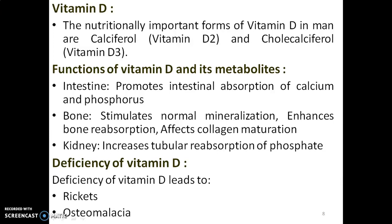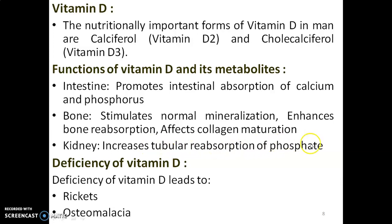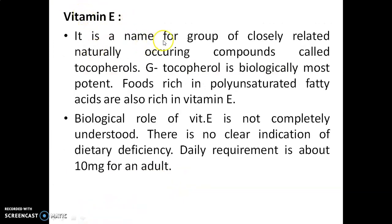Vitamin D: the nutritionally important forms in humans are calciferol (vitamin D2) and cholecalciferol (vitamin D3). Functions of vitamin D and its metabolites: in the intestine, it promotes absorption of calcium and phosphorus; in bone, it stimulates normal mineralization, enhances bone resorption, and affects collagen maturation; in the kidney, it increases tubular reabsorption of phosphate. Deficiency of vitamin D leads to rickets and osteomalacia.